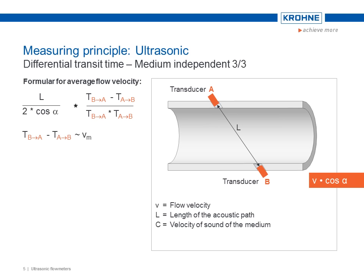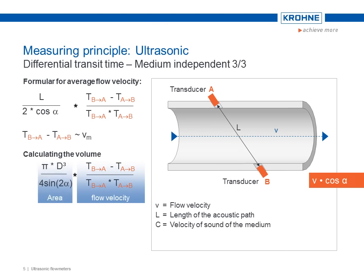Equations 2 and 3 combine to result in the formula: path length divided by 2 cos alpha multiplied by the transit time. This represents the average flow velocity. When multiplying the average flow velocity with the cross section of the pipe, we get the flow rate Q.